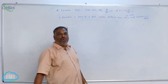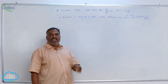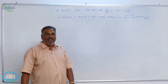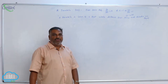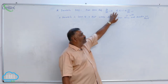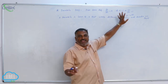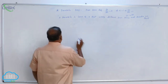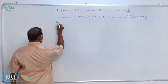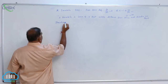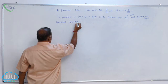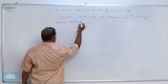Throughout the chapter on parabola, the value of eccentricity is not explicitly given — it is understood. Take it for granted that the e value equals 1 in the case of a parabola. Now let us derive the standard equation of the parabola.